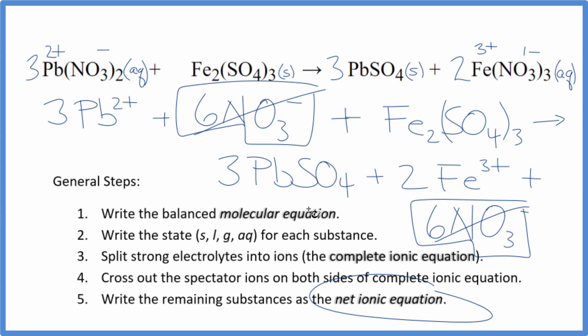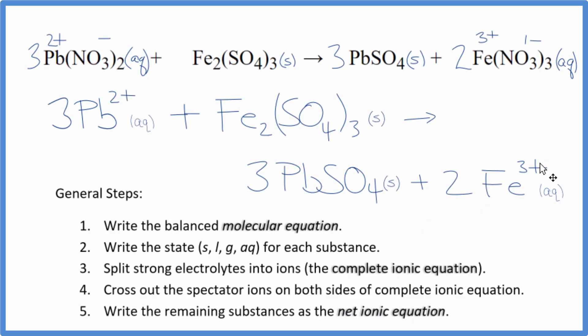That means this is the net ionic equation for lead 2 nitrate plus iron 3 sulfate. Let me clean this up and we'll have our net ionic equation. So, this is the balanced net ionic equation for this lead 2 nitrate and iron 3 sulfate. You'll note that charge is conserved. I have 3 times 2 plus. That gives me 6 plus. Then I have 2 times 3 plus. That's 6 plus. So, 6 plus on both sides. Charge is conserved. If I hadn't fixed the nitrate earlier on, charge probably wouldn't be conserved. The atoms, they're also balanced as well.